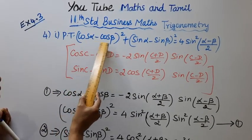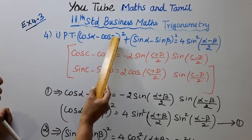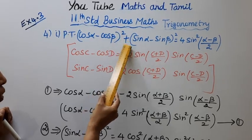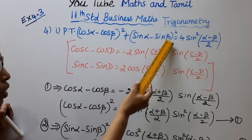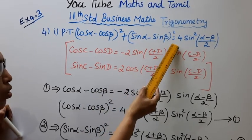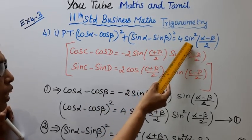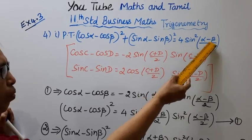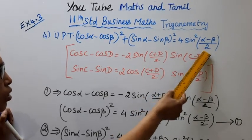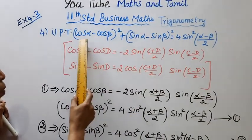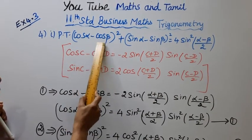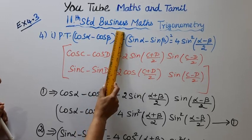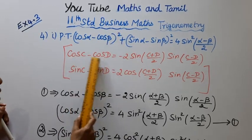Prove that (cos α minus cos β) whole square plus (sin α minus sin β) whole square equals 4 sin square (α minus β) by 2.